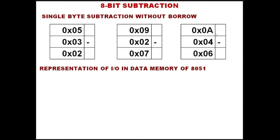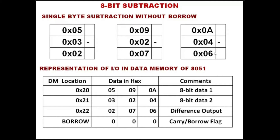This is single byte subtraction without borrow. We are not getting any borrow because the first number is larger than the second, hence the difference is only positive. Borrow is nothing but carry — when we do addition we look at the carry flag, and when we do subtraction we also look at the carry flag, which is called the borrow flag. There is no separate borrow flag; the carry flag serves as the borrow flag. This we must be very clear about before writing the code.